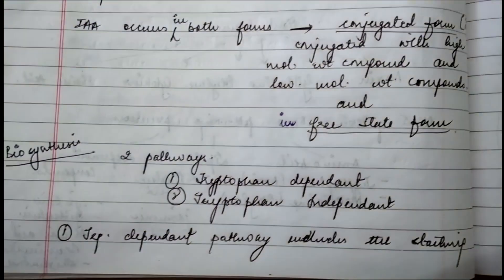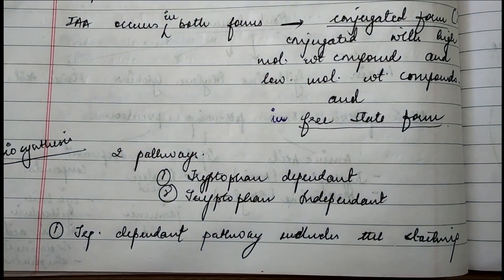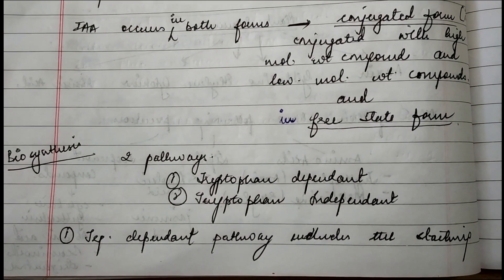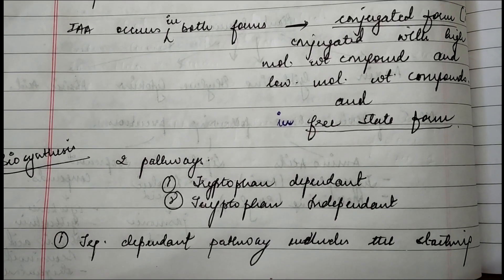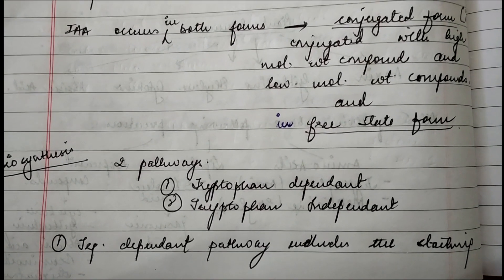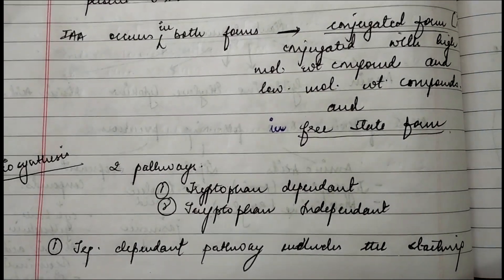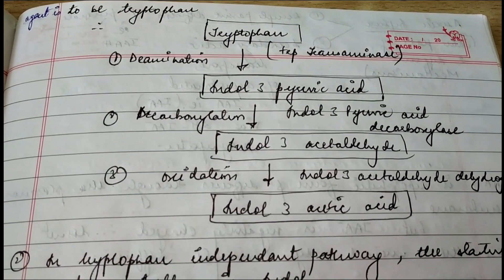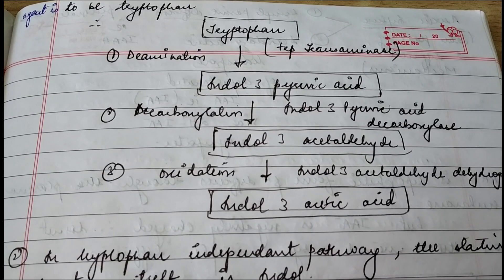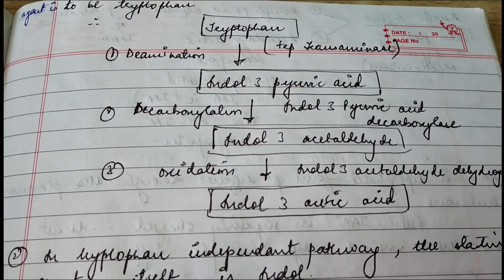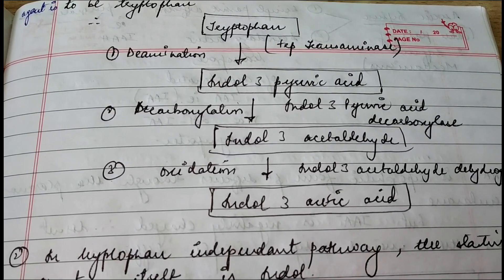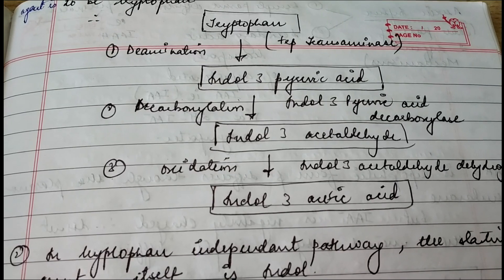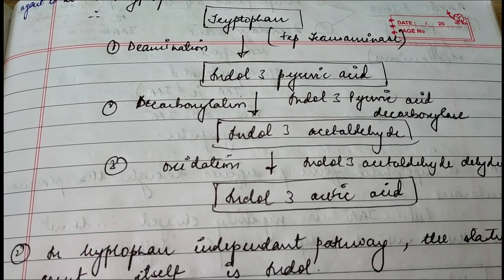For biosynthesis, there are two pathways. The first is the tryptophan-dependent pathway, where tryptophan acts as the precursor (an amino acid). In this pathway, the starting material is tryptophan, which is converted to indole-3-pyruvic acid. This step is known as a deamination reaction — removal of the amine group — and the enzyme involved is tryptophan transaminase.